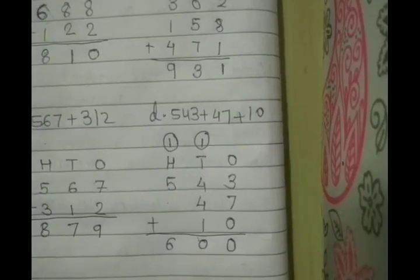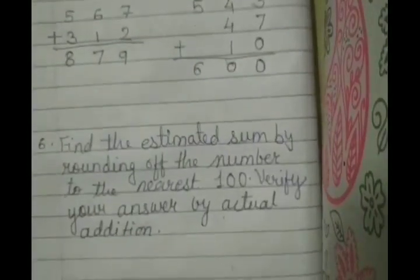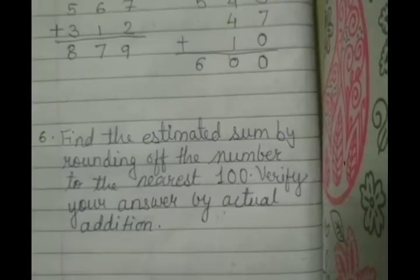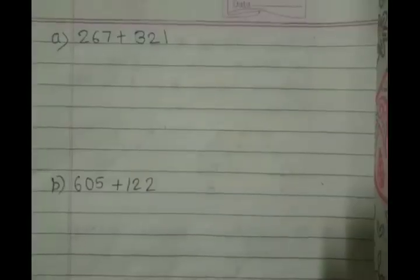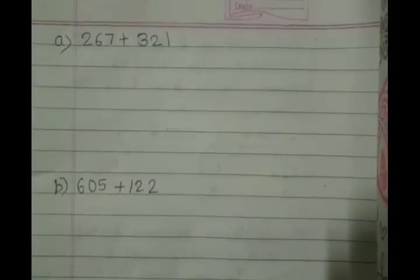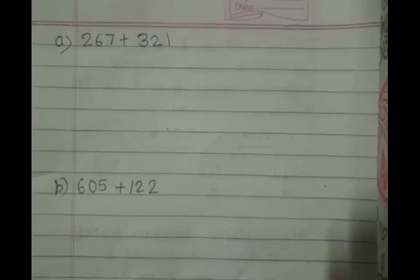Now come to the question number 6. Find the estimated sum by rounding off the number to the nearest 100. Verify your answer by actual addition. Let's see the first sum. Here is the first.